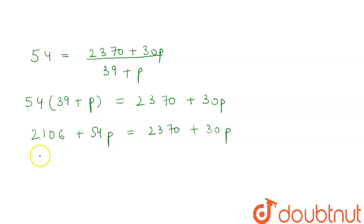Now taking the constants on one side and the variables on the other, we will get 54p minus 30p is equal to 2370 minus 2106.